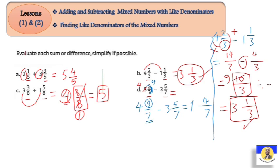Of course the first method is easier. You can always work with the first method as I explained. But you also need to know the improper fraction method because depending on the answer choices, you may need to convert. You should be able to work both ways: simplifying the mixed numbers directly, or converting to improper fractions.